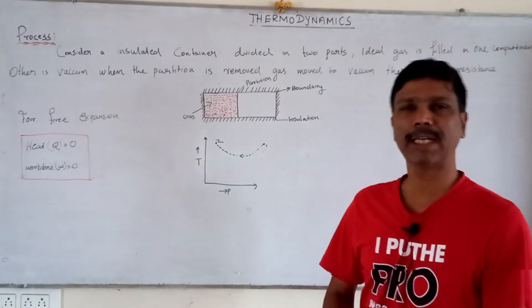When the partition is removed, the gas moves into the vacuum. There is no resistance, so it is called free expansion. The gas moves from state point 1 to state point 2. There is no heat transfer and no work transfer in the free expansion process.